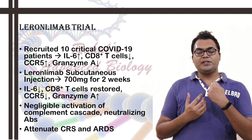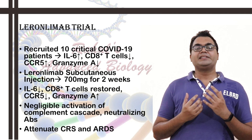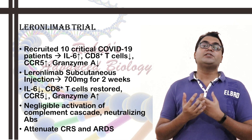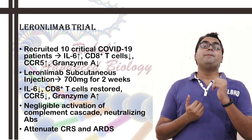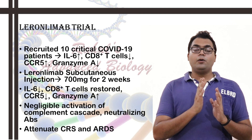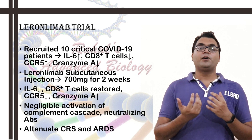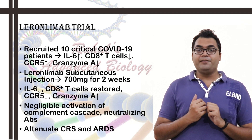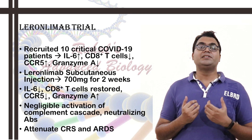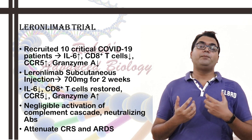RNA sequencing was also done. The patients were administered a 700 mg dose of leronimab monoclonal antibody for two weeks. After day four or five, blood work and single-cell RNA sequencing were performed again. It showed that plasma IL-6 level plummeted, granzyme A levels escalated, and the CD4 to CD8+ T cell ratio normalized. The patients recovered from lymphocytopenia, and CCL5 — the chemotactic factor — also got downregulated. The patients were able to recover, making it a very positive trial.